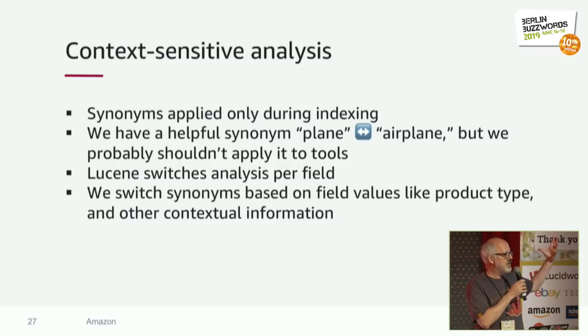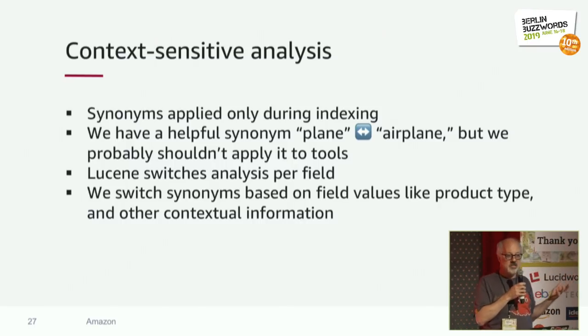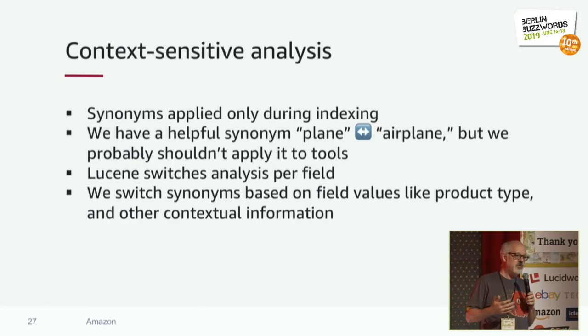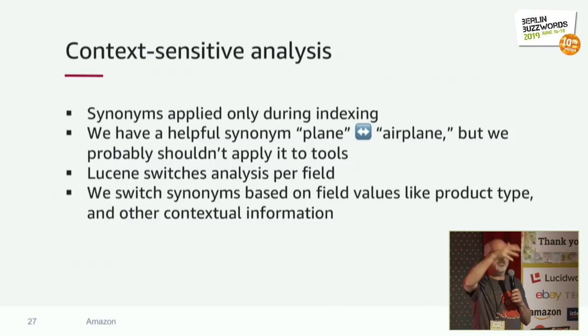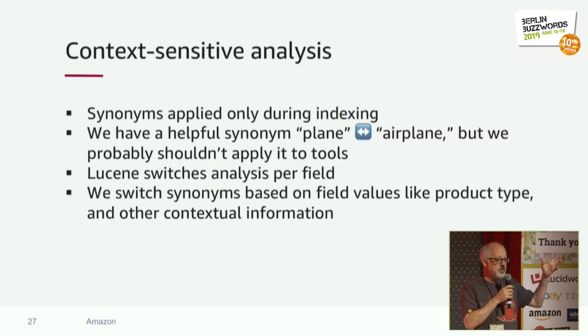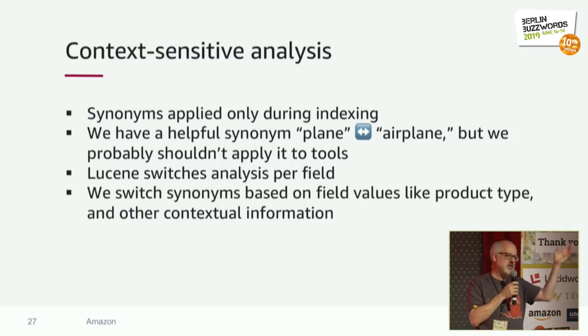We want to apply different analysis chains depending on values from another field — in this case, the product category. That was challenging in Lucene's APIs because you typically specify which analyzer applies to which field, with no way to combine information from other fields. So we had to write some custom code around that. At some point, a discussion on the mailing list led to an entirely new way of handling this: a conditional token filter, which we didn't have time to use because it came out later, but that'll be a nice new approach for this kind of problem.